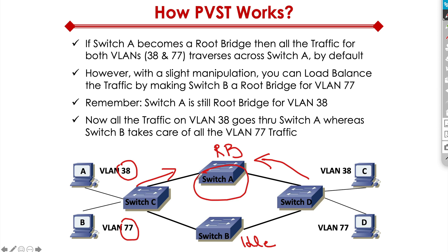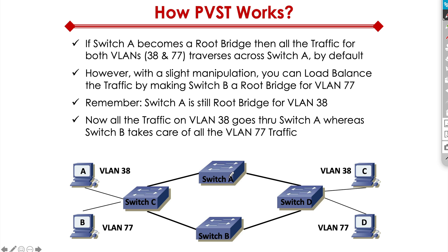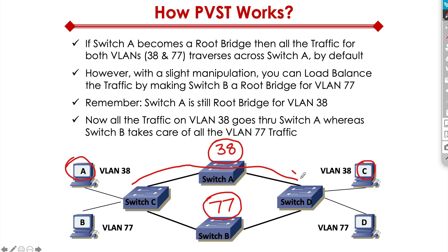Instead of using switch A as root bridge for all VLANs, we make switch A primary for VLAN 38 and switch B primary for VLAN 77. This way, if host A on VLAN 38 wants to talk to host C on VLAN 38, traffic will flow through switch A. However, if host B wants to talk to host D, traffic can flow through switch B, because we now have two different root bridges. This allows us to create a very efficient layer 2 network — that's why PVST was designed by Cisco.